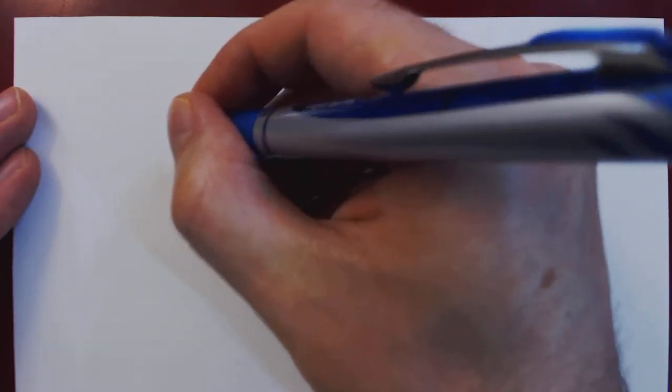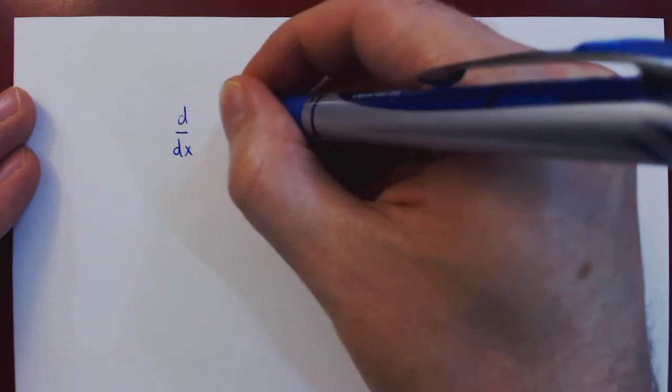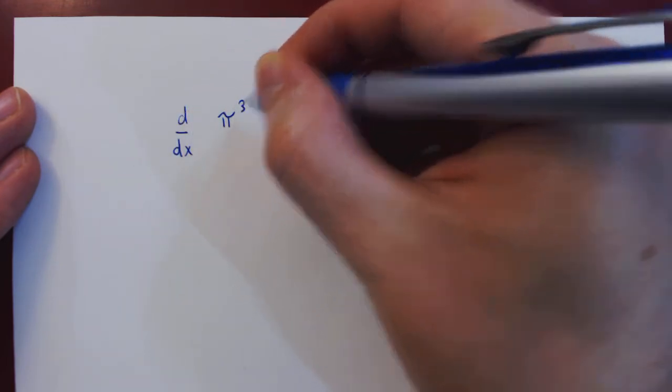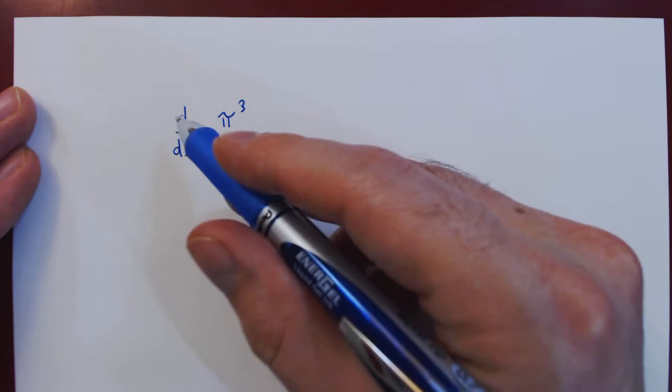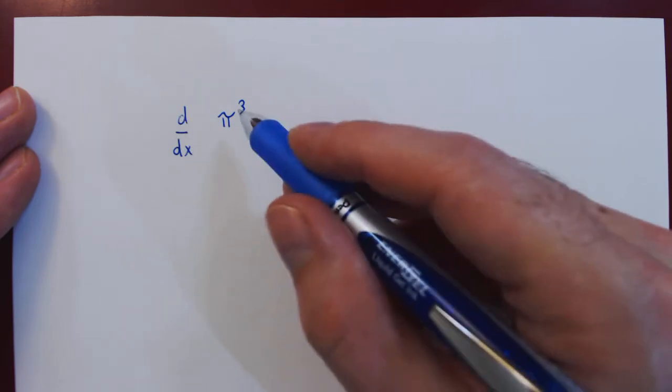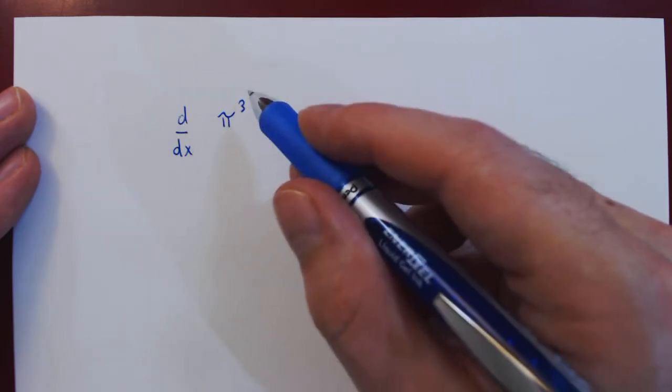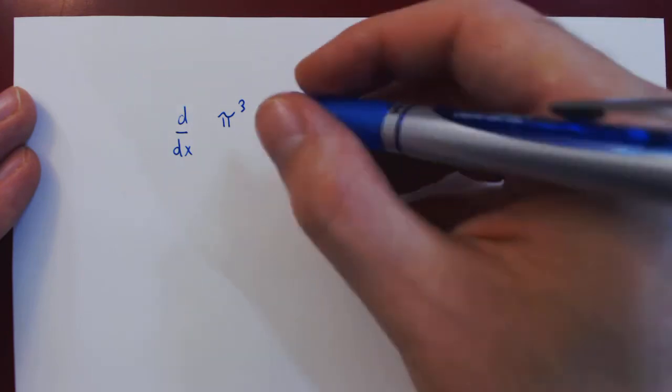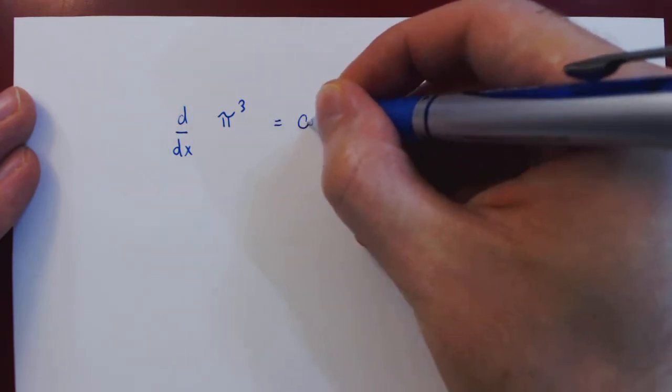Suppose we want to take the derivative with respect to x of π cubed. Well, we differentiate a function with respect to x, but there is no x. π cubed is a constant, therefore its derivative is equal to 0.